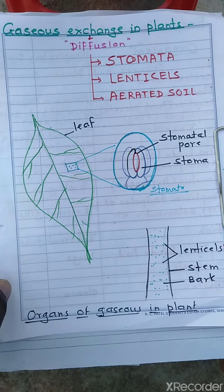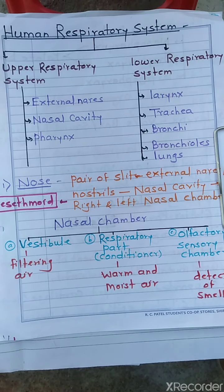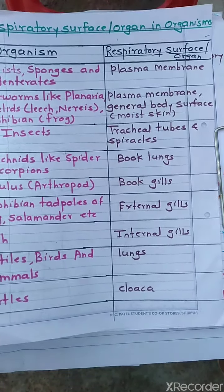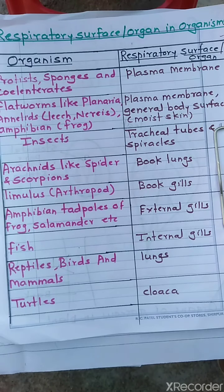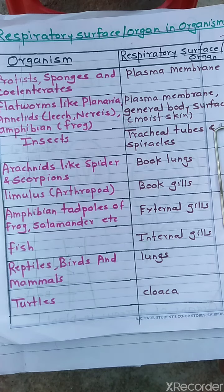Now we will see respiration in animals. Does respiration in animals occur similarly? Do all animals respire in the same fashion? No. All animals do not respire in a similar fashion. The respiratory surface or respiratory organs differ in various animals. In animals, the process of gas exchange depends on their habitat.